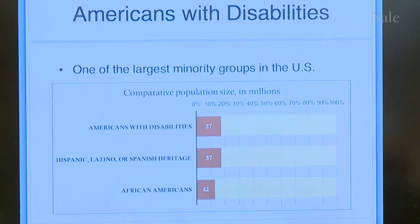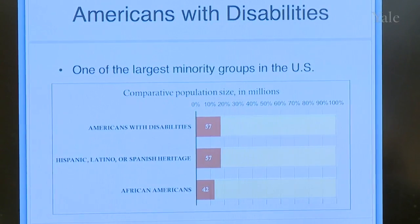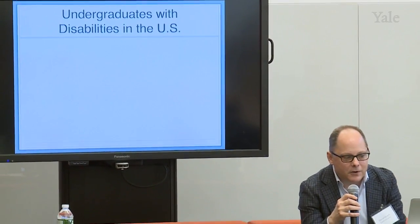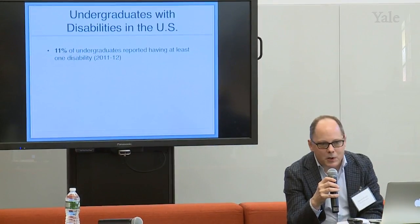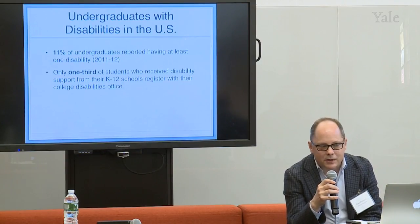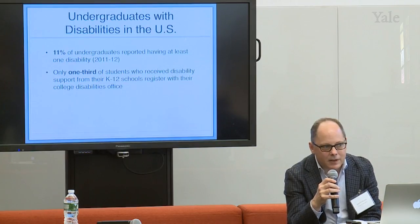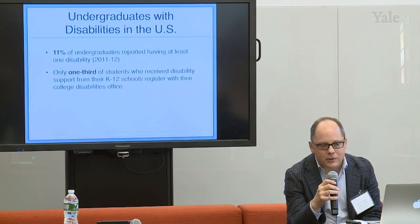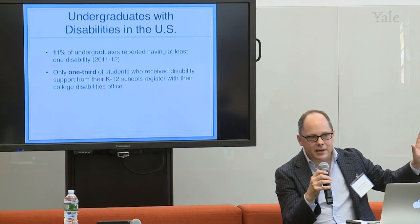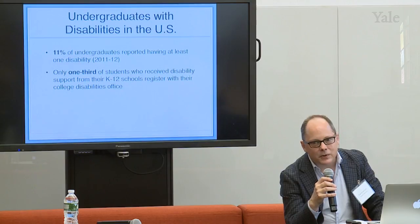That makes up 19% of the U.S. population. In terms of the population among undergraduate students, 11% of undergraduate students nationally, as well as here at Yale, reported having at least one disability. But that number probably undercounts the total. Of all the students who, in their K-12 educational environment, received some type of support from their schools, only one-third of those actually register when they go to college with the office supposed to support students with disabilities. So this suggests that of these 11% of undergraduates who self-identify as having a disability, the number is probably much larger.